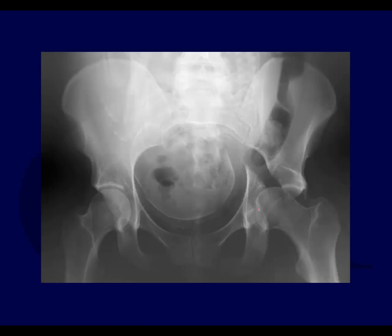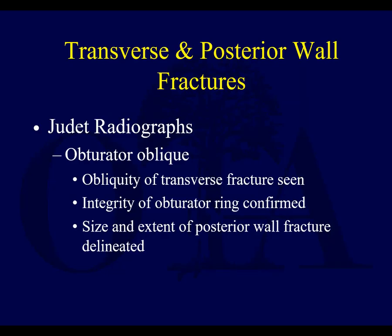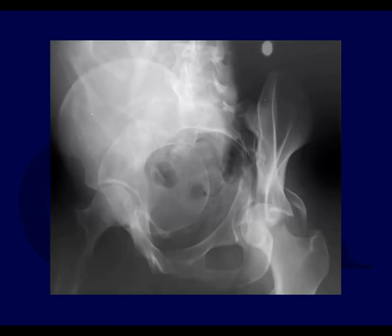Here you can see medial displacement of the femoral head — it's not articulating with the dome at all, and there appears to be some other fracture fragment. The obturator oblique is going to show you the obliquity of the transverse fracture line, the integrity of the obturator ring to determine if it's T-shaped, and then the posterior wall. On this obturator oblique, you can see the obturator ring — no fracture lines through it. You see disruption of the iliopectineal line and a big posterior wall fragment.